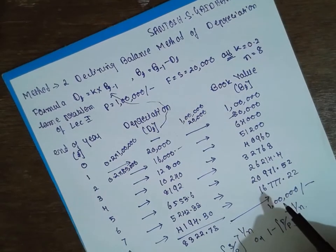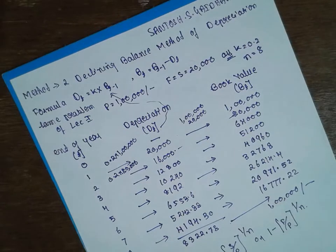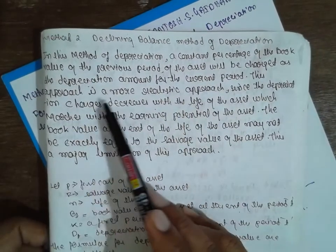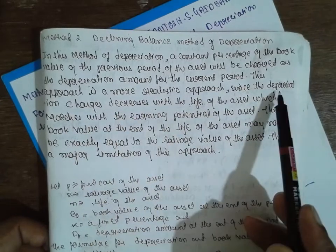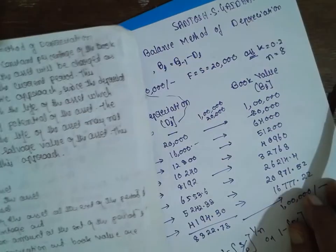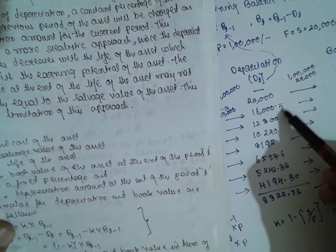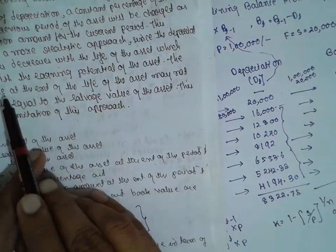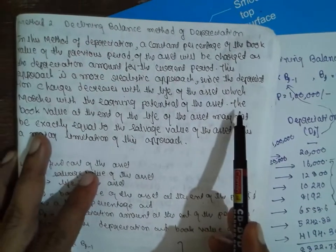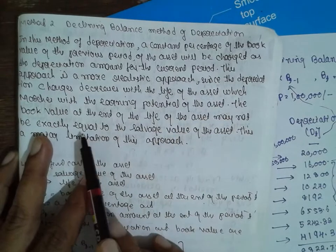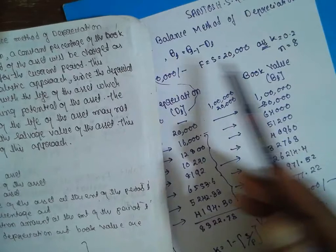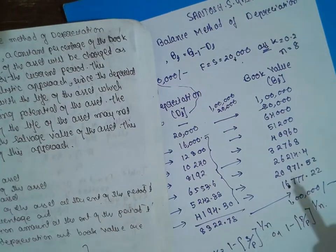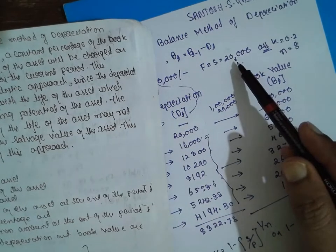As per the explanation: first, the depreciation charges continuously decrease with the life of the asset, satisfying the first condition. Second, the book value at the end of the life of the asset may not be equal to the exact salvage value. The salvage value is 20,000, but the book value at end of year 8 is 16,777.22 — it is not equal to 20,000. This is the major limitation of the declining balance method.